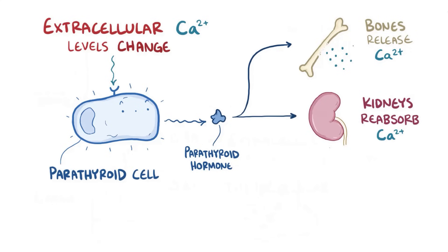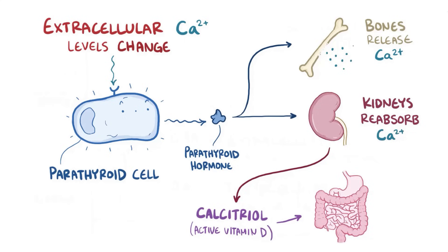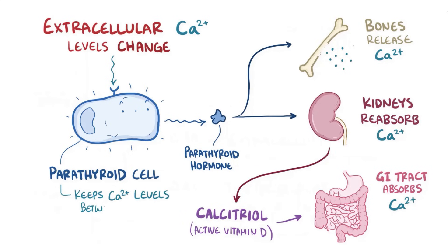Parathyroid hormone also stimulates the kidneys to synthesize calcitriol, also known as active vitamin D. Active vitamin D then causes the gastrointestinal tract to increase calcium absorption. Altogether, these effects help to keep the extracellular levels of calcium within a very narrow range, between 8.5 to 10 mg per deciliter.